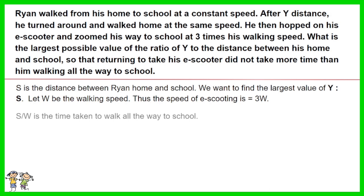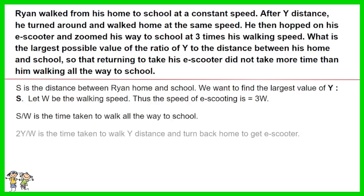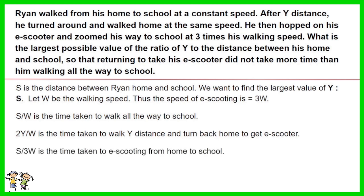s over w is the time taken to walk all the way to school. 2y over w is the time taken to walk the distance y and turn back home to get the e-scooter. s over 3w is the time taken to e-scoot from home to school.